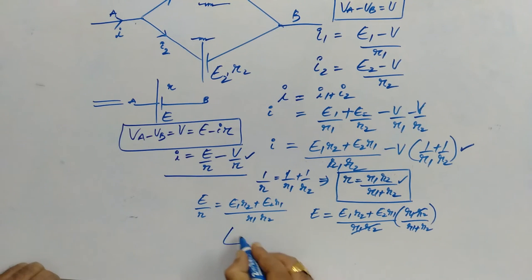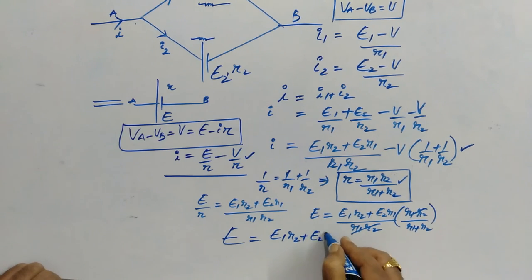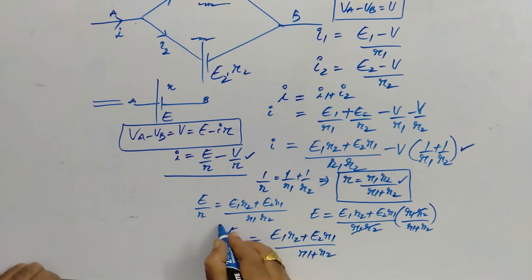the value of E is equal to E1 R2 plus E2 R1 by R1 plus R2.